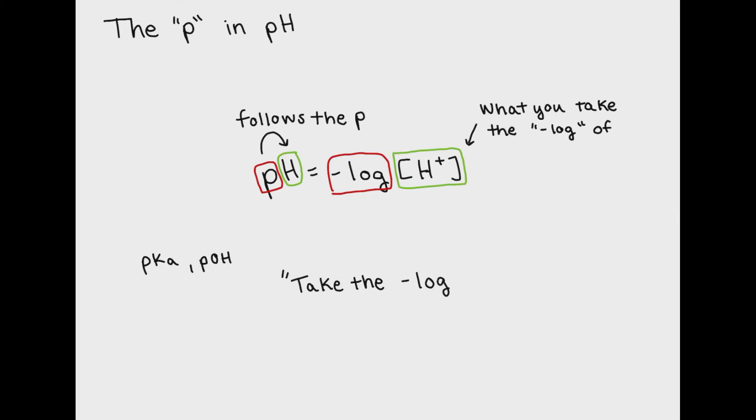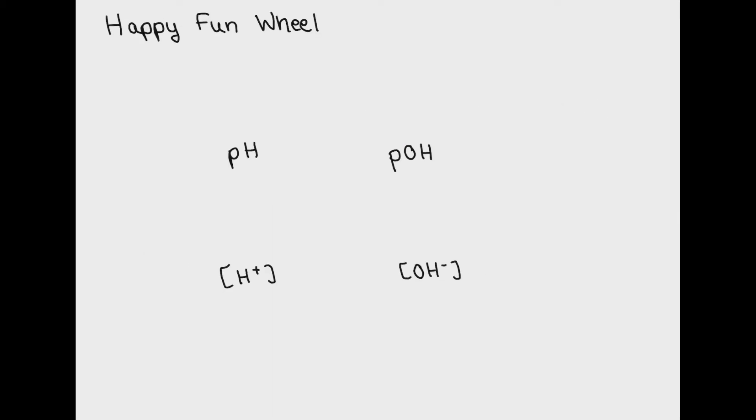Alright, now that we know what the p in pH means we can talk about the happy fun wheel. Here I've got an outline of the happy fun wheel which is the connections between pH, pOH, H+, and OH- concentration. Here I'm going to write out all of the methods to get from one area of the diagram to another.